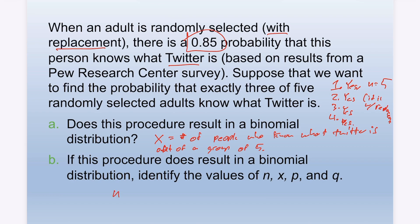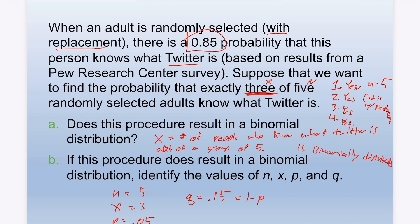Condition four: is the probability the same? Yes, the probability is 0.85, so yes it is the same. Since all four conditions are met, it is binomial. n is going to be 5, x in this case is 3.